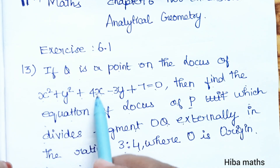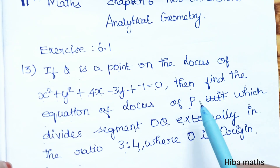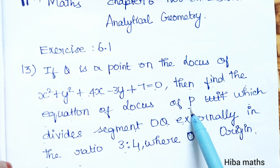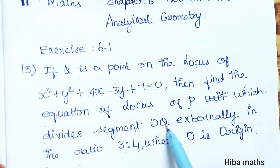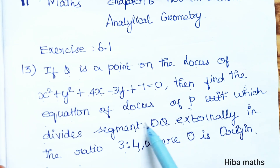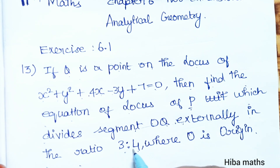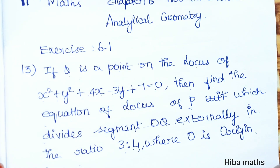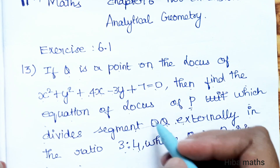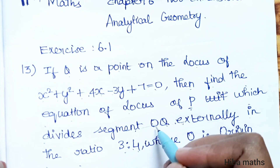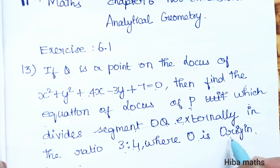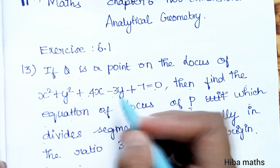First, Q is on the given equation and P is the point. P divides the line segment OQ externally in the ratio 3:4. We will use the external division formula from 9th standard. O is the origin, and Q is the point on this locus.